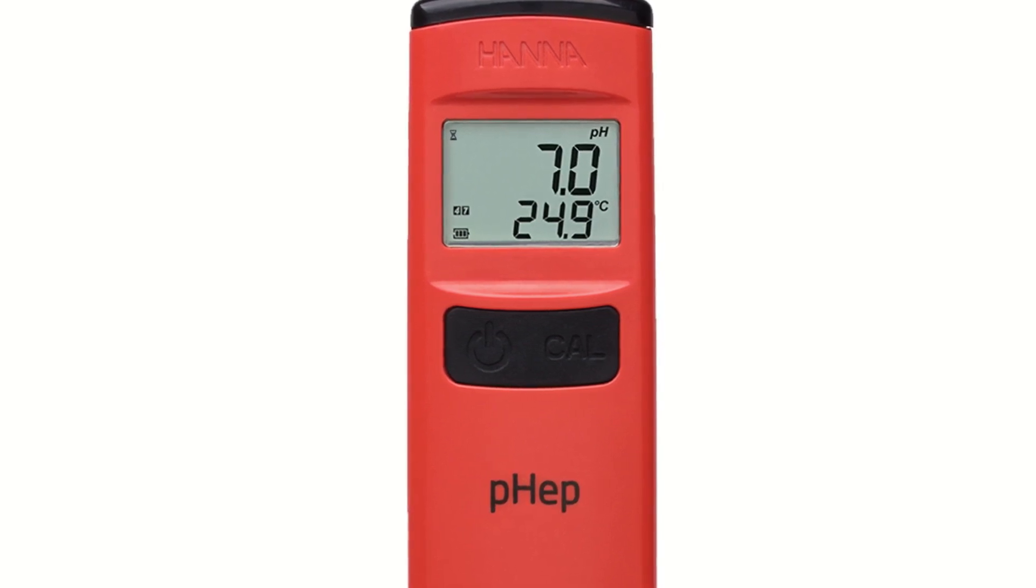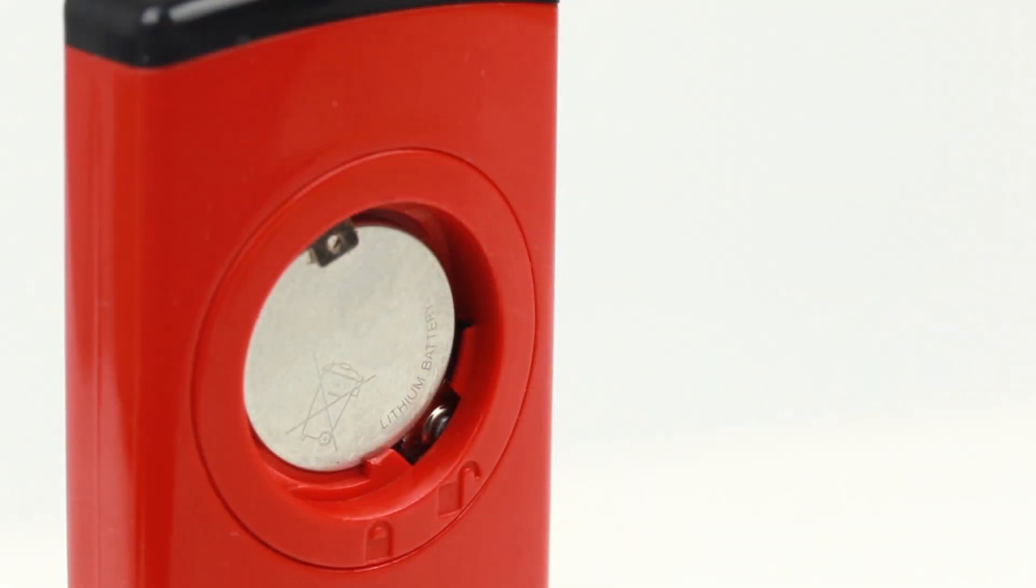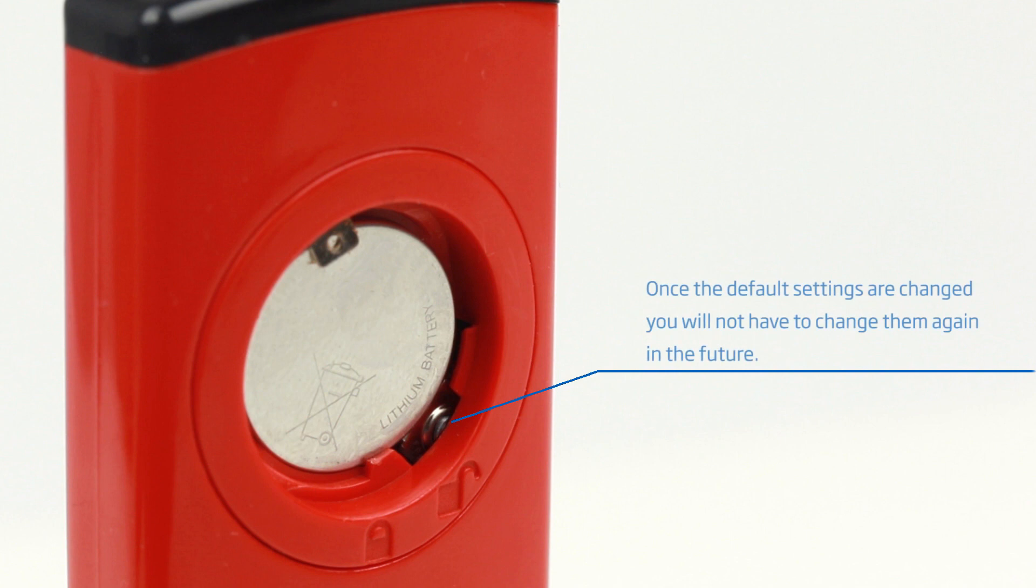The daily operation of the meter has been simplified to just two buttons. One is for turning the meter on and off, while the other is used to enter calibration mode. There is a third button in the battery compartment that allows the user to choose the displayed temperature unit and adjust the automatic shutoff time.